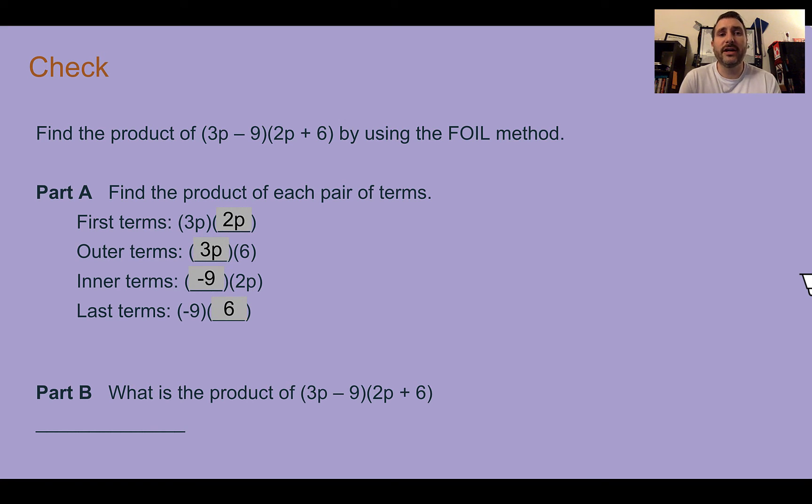Check your answer. First, part a, if we're finding the products, we're pairing each thing together. So first, 3p and 2p. Outer, 3p and 6. Inner, negative 9 and 2p. And last, negative 9 and 6. Then, if we're multiplying all that out, together here, we'd have 6p squared. Here, we would have 18p. Here, we would have negative 18p. And we would finally have negative 54. The final product, then, is just going to be 6p squared minus 54, since positive 18 and negative 18 would go to 0p.